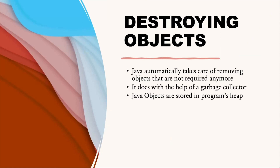Now that we've played with our objects and are familiar with them, it's time to put them away. Luckily, Java automatically takes care of that for you — Java provides a garbage collector to automatically look for objects that aren't needed anymore. All Java objects are stored in your program's heap memory. The heap, also referred to as the free store, represents a large pool of unused memory allocated to your Java application. The heap may be quite large but there is always a limit to its size.